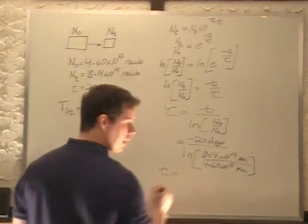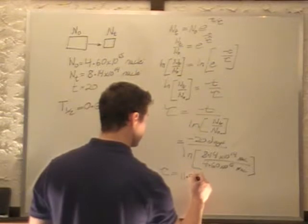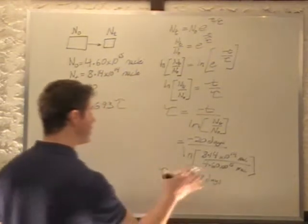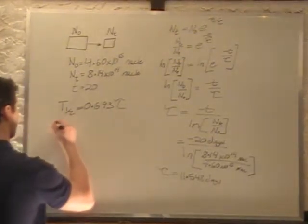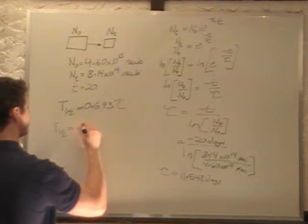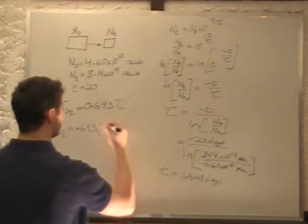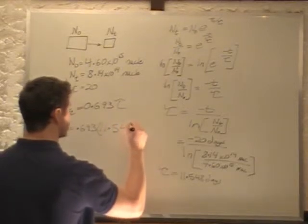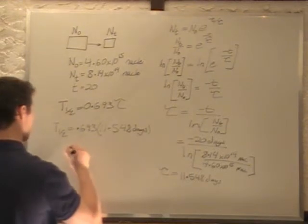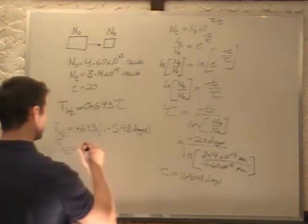We get a tau of 11.548 days. We take this tau and plug it into here. So our half-life becomes 0.693 times 11.548 days, which gives us a half-life of 8.01 days.